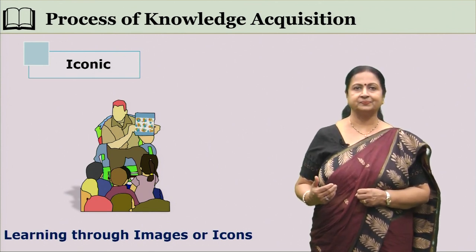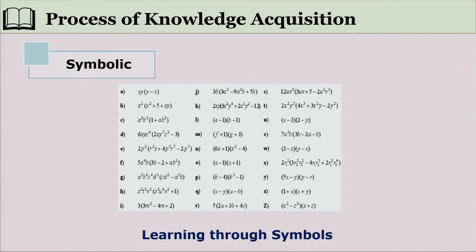The third phase is symbolic. After having explored through manipulation and gained more information through diagrams, movies, and charts, the learner uses words or formulae to represent the acquired knowledge. The symbolic stage is the final stage of the knowledge acquisition process, in which we represent our thoughts in the form of symbols.